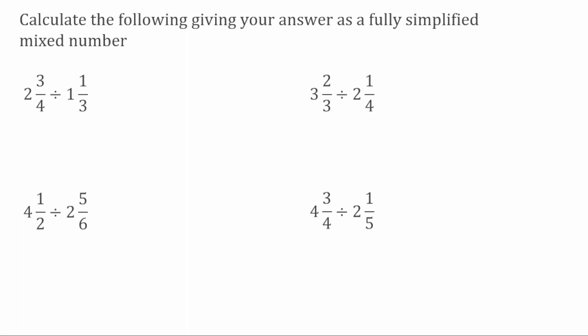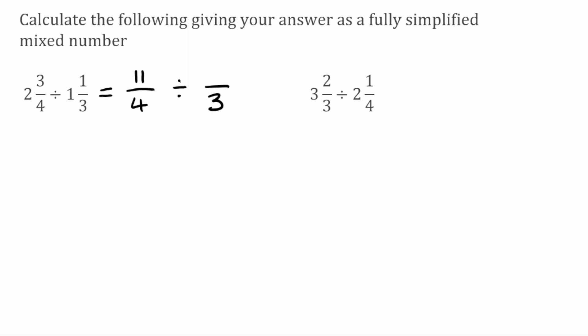We've got some more questions to have a go at now — feel free to pause the video and have a go, and we'll go through the solutions in just a few seconds. For this question we've got two and three quarters divided by one and one third. We want to change these to improper fractions — a fraction over four divided by a fraction over three. For the numerator of the first one: four times two is eight, add on the three gives 11, so that's 11 over four. For the next fraction: three multiplied by one is three, add on the one gives four, so that's four over three.